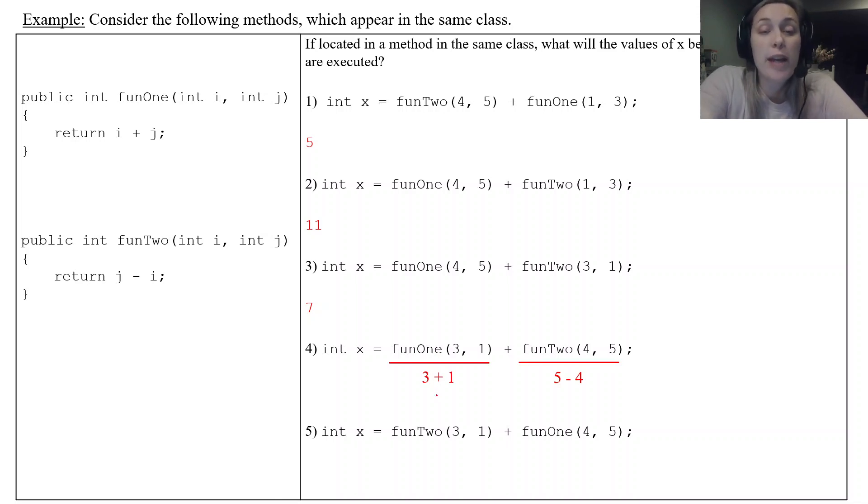Three fun one adds them together. Fun two takes the second minus the first one. So four plus one is five. And then fun two you'll get a negative two. Four plus five. So this is also going to be a seven.